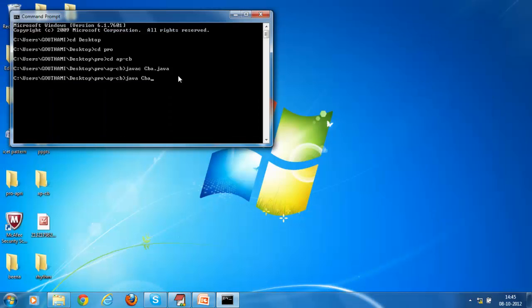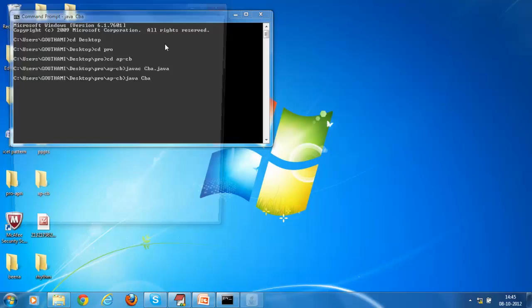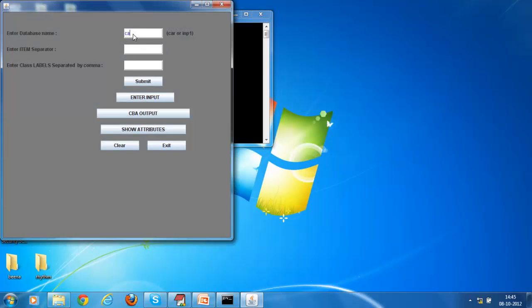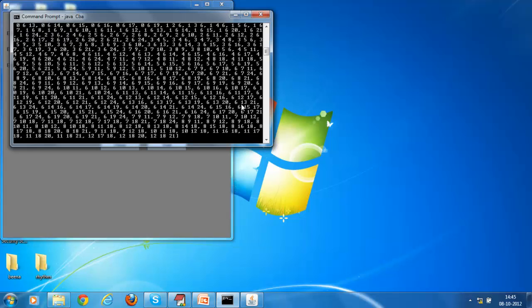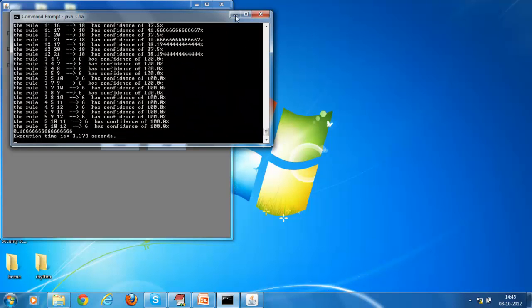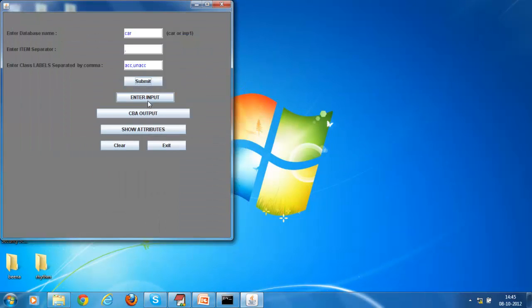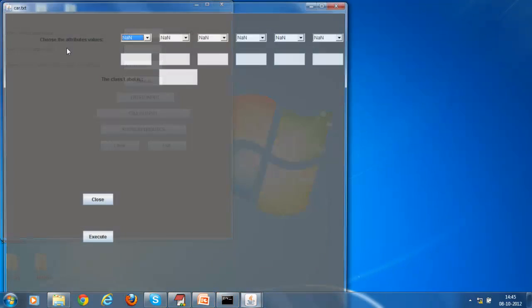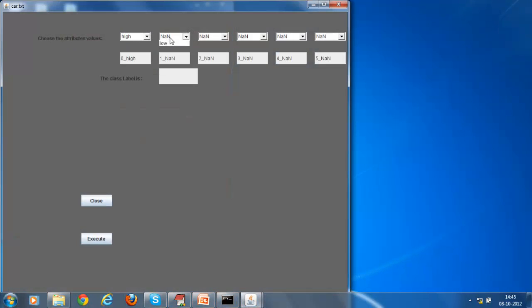Now I will explain the execution of the CBA we will execute using command prompt. Now as the input window is popped we need to enter the data and submit it. As we submit the data the apriori is executed and shown as the table format with the frequent item sets.